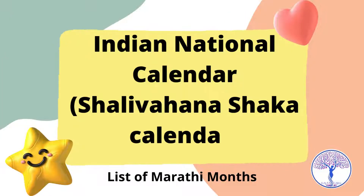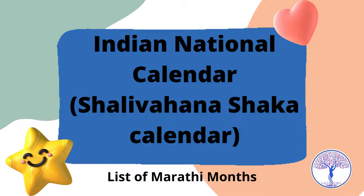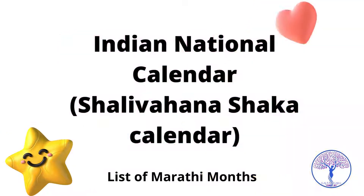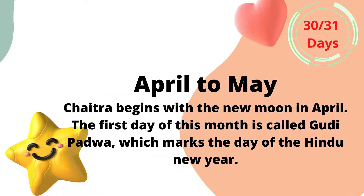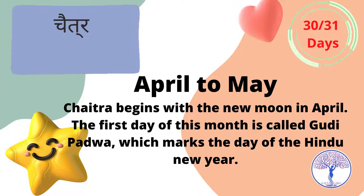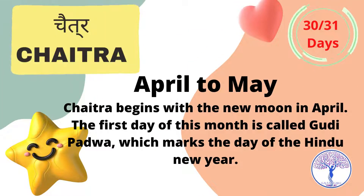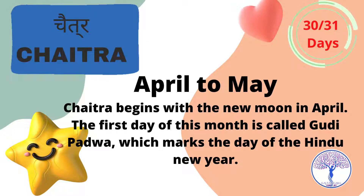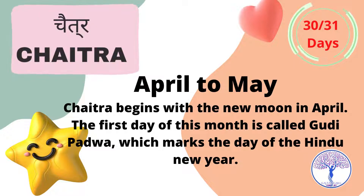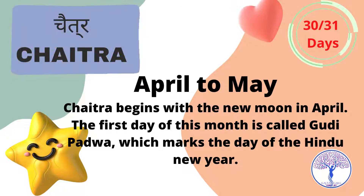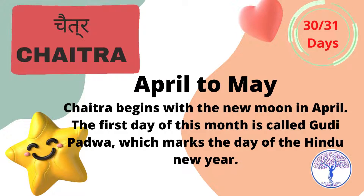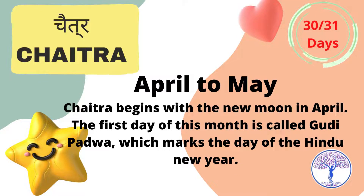Indian National Calendar: the Shalawahana Shaka Calendar. Chetra spans April to May and begins with the new moon in April. The first day of this month is called Guripurwa, which marks the day of the Hindu New Year.